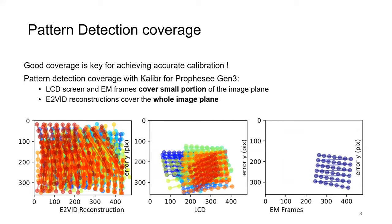Coverage of the detected patterns by caliber in the image plane of the Gen3 ATIS event camera is shown here. In the case of e2vid reconstructions, the whole image plane is covered with the detected patterns, while this is not the case for the LCD and EM frames. Good coverage is key for achieving accurate calibration.